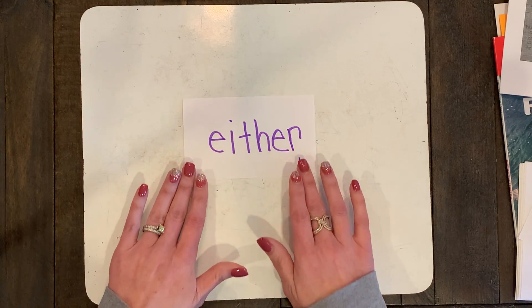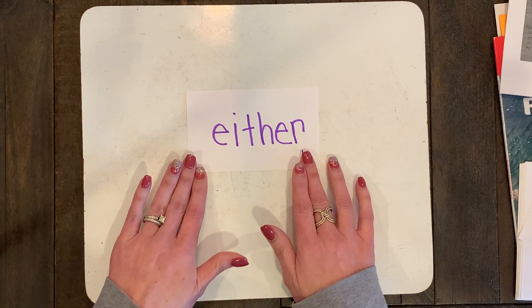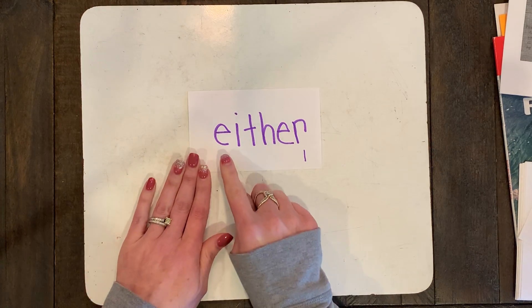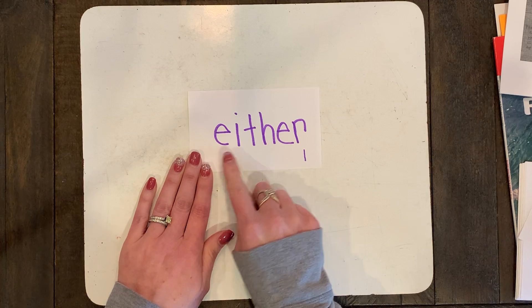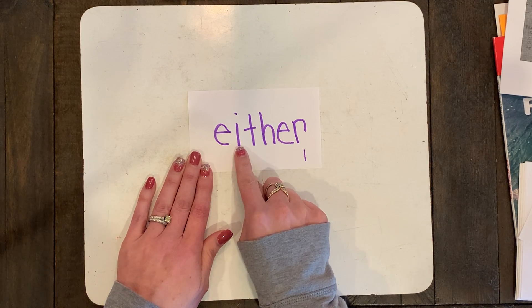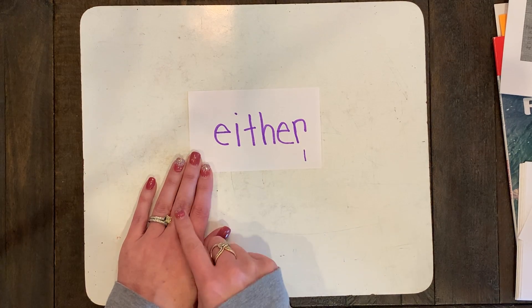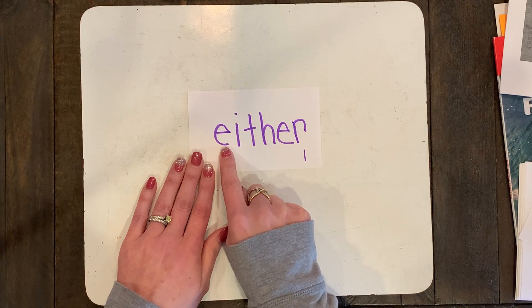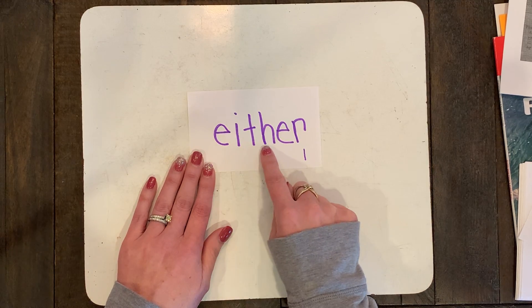There is a vocabulary word — actually a word that might be hard for us, something we don't use very often. The word is "either." If you look at the beginning of the word, you have two vowels together. Remember, when two vowels are together, the first one does the talking. So: either.